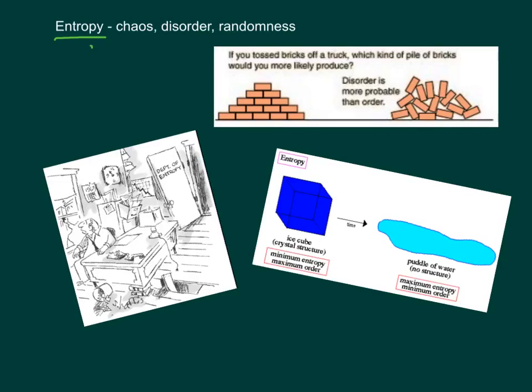The symbol for entropy is S. I have no idea why. Don't ask. Got no clue. Entropy is basically chaos or disorder or randomness. It's how randomly distributed something or how disordered it is.